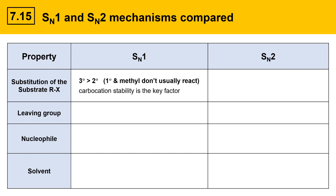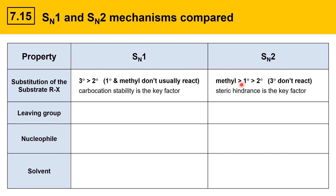In SN2 reactions, methyl halides are the most reactive, followed by primary, followed by secondary, and tertiary don't react. In this case, it's all about steric hindrance. Steric hindrance of the nucleophile is the key factor.